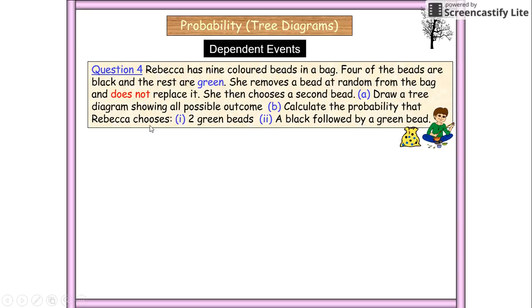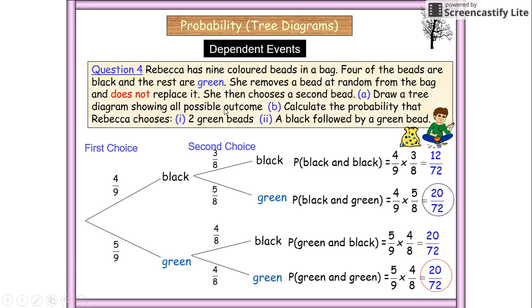Rebecca has nine colored beads. Four of the beads are black. The rest are green. So we start off straight away knowing we've got nine. We know that four out of nine are black, and we know then that five out of nine are green. She removes a bead, does not replace it. She then chooses a second bead, draw a tree. So let's see what the tree looks like. Okay, there we go.